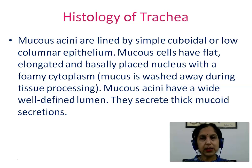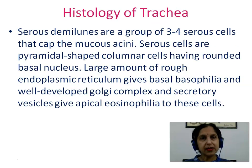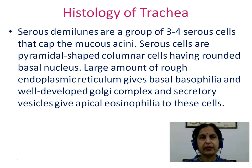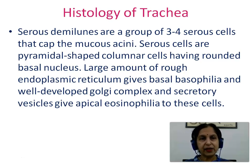Mucous acini have a wide well-defined lumen and they secrete thick mucoid secretions. Serous demilunes are a group of three to four serous cells that cap the mucous acini. Serous cells are pyramidal-shaped columnar cells having a rounded basal nucleus. A large amount of rough endoplasmic reticulum gives basal basophilia, and well-developed Golgi complex and secretory vesicles give apical eosinophilia to these cells.